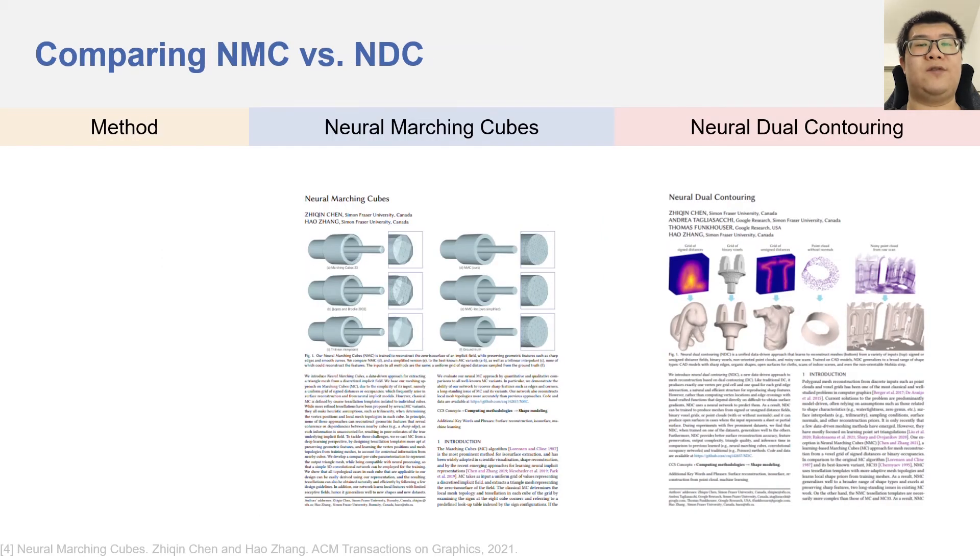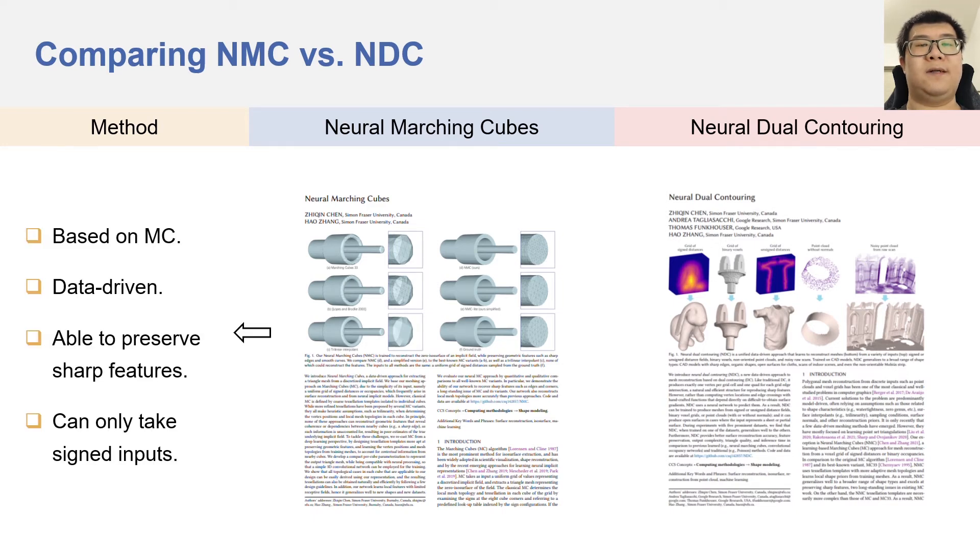Before going into the experiments and the results, I think it is worthwhile to compare UNDC with our prior work, neural marching cubes, or NMC, because these two works are closely related. NMC is based on marching cubes. It is data-driven and able to preserve sharp features, similar to our method. But it can only take signed inputs, meaning that it cannot take unsigned distances or point clouds as input. Therefore, we will compare the signed version of our method with NMC.